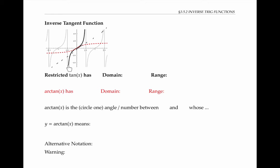We've taken the piece marked in black. When we flip that over the line y equals x, we get this piece in red, which is actually a function because it satisfies the vertical line test.